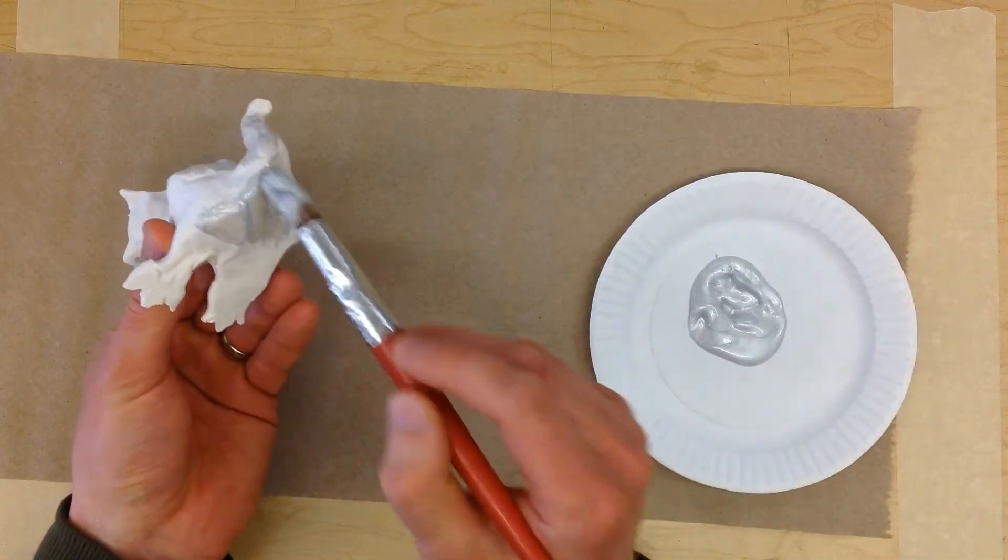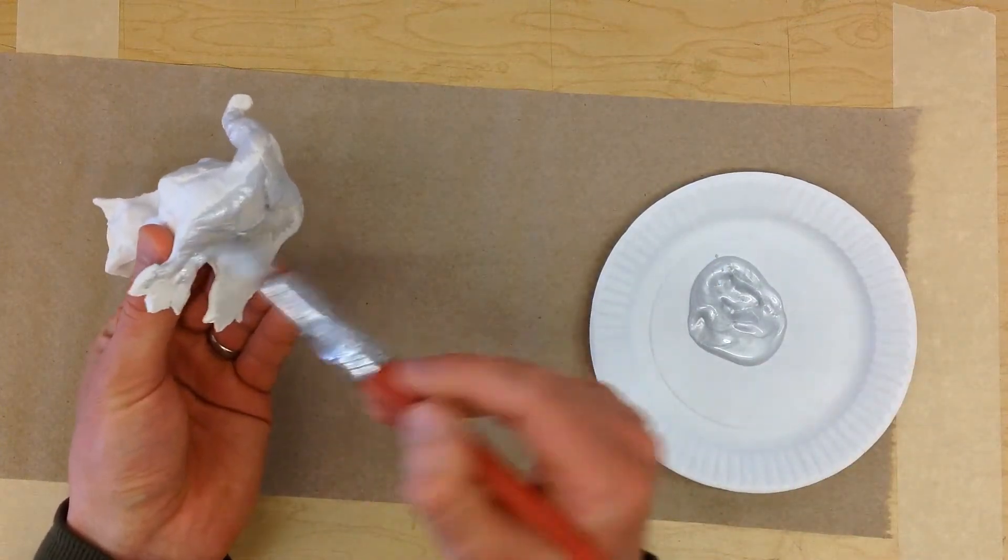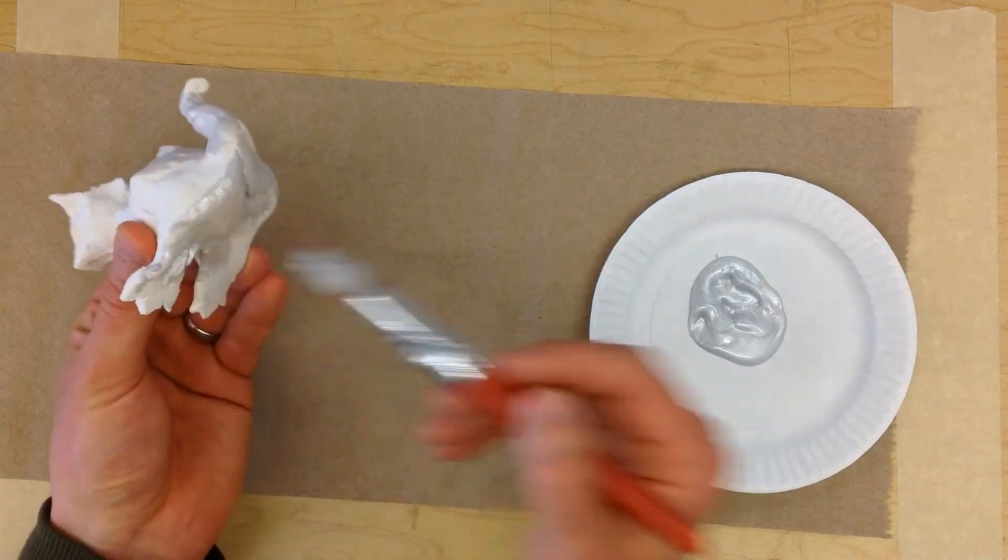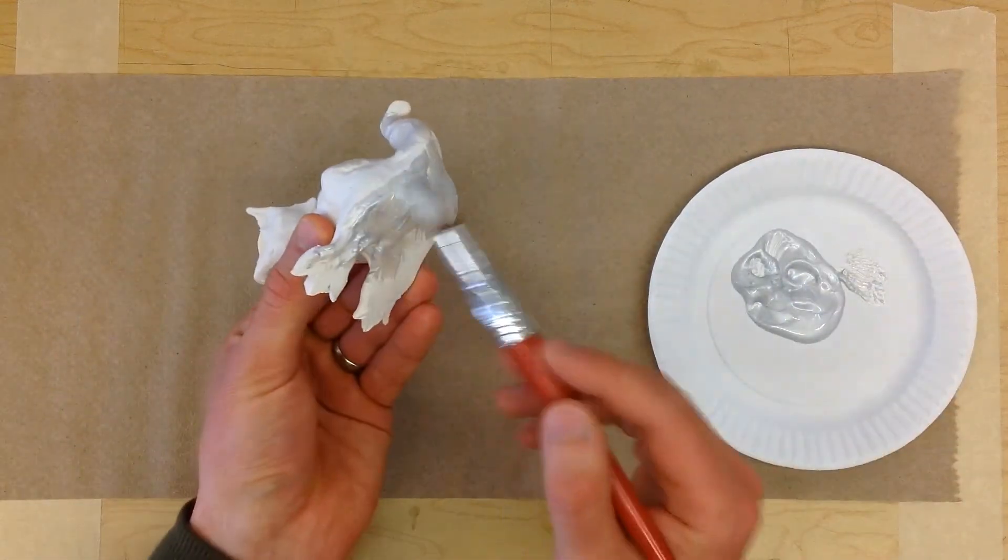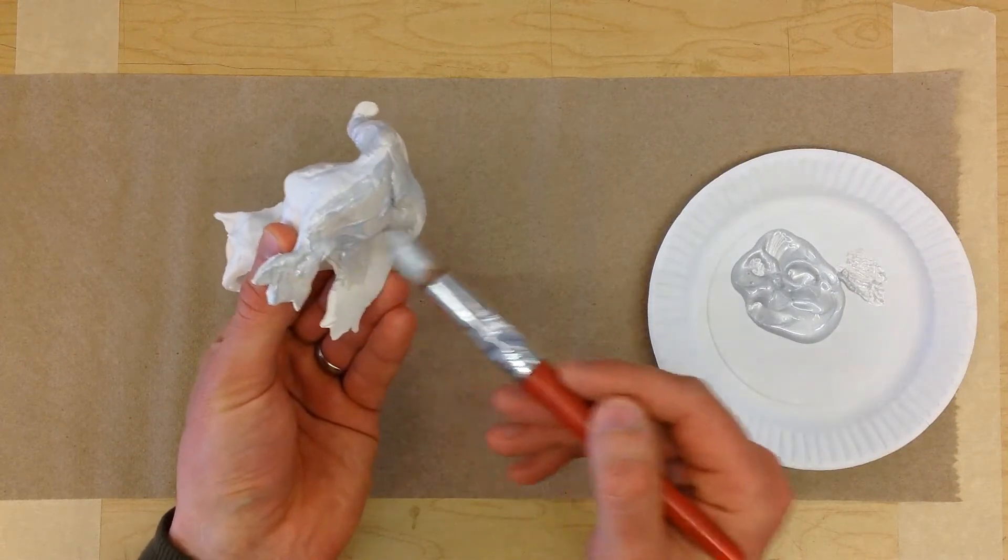When we use glaze on clay, we don't glaze the bottom because it'll fuse to the kiln—it'll stick to it because glaze actually melts and turns to glass.